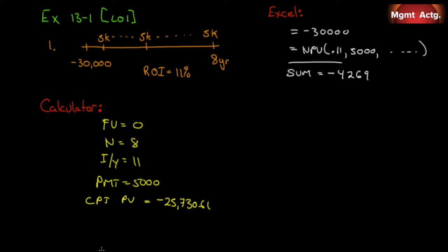And we will get negative $25,730.61. We'll round that off in a second. Now that's just the present value of the future cash flows. We want net present value, so NPV equals $25,731 minus $30,000 cash outflow. So there's our inflows minus our outflows equals negative $4,269.